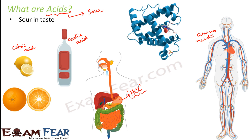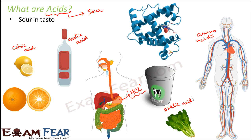When the concentration of HCl increases in the stomach, that is when we suffer from acidity. Spinach also contains an acid called oxalic acid. Curd, which is consumed by us very frequently and is actually prepared from milk, also contains an acid called lactic acid. So all these common substances contain so many acids.